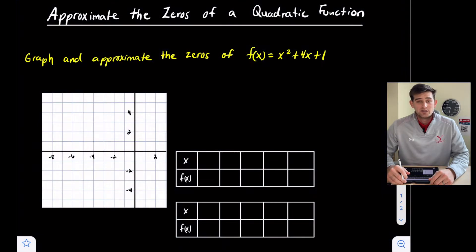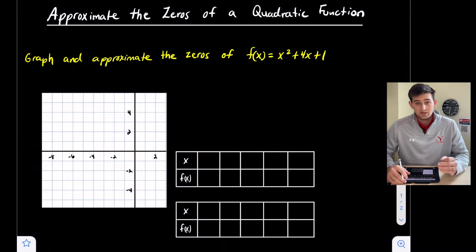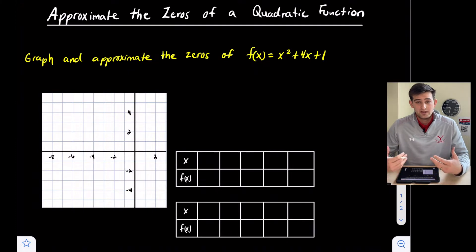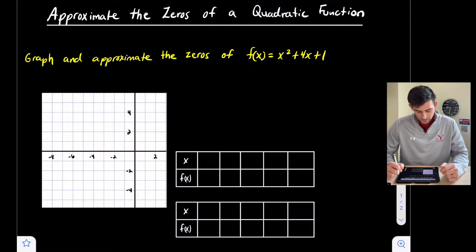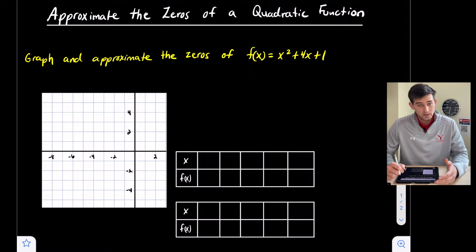Hello everybody. In this video we're going to talk about how to approximate the roots, solutions, or zeros of a quadratic function. Our example says: graph and approximate the zeros of f(x) = x² + 4x + 1. So let's go ahead and graph this.